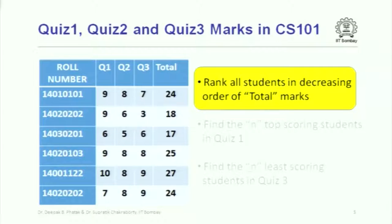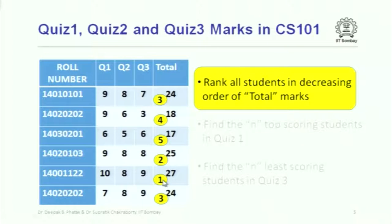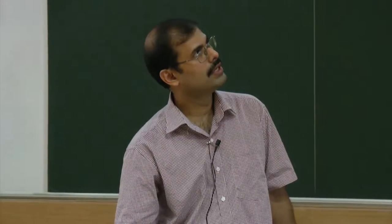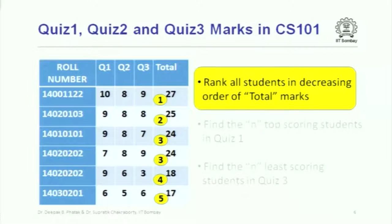If I focus on the problem of ranking all students in decreasing order of total marks, I look at the last column and figure out who got the highest marks, put a tag 1 there, the next highest gets tag 2, and so on. Once we have put all these tags, it is more convenient to put the student with the highest marks at the top of the table, the next highest in the second row, and so on — essentially rearranging the rows. Once the table is presented in this form, the students are already ranked in decreasing order of total marks.